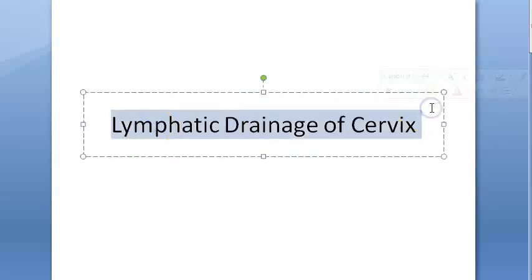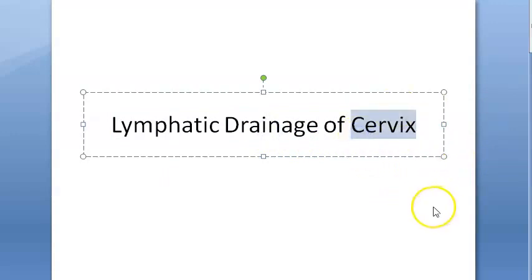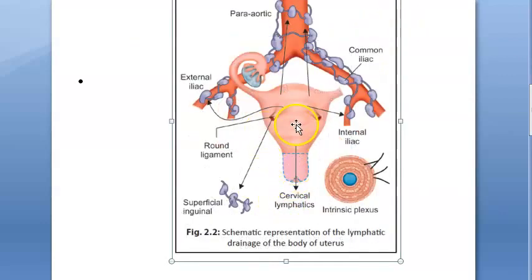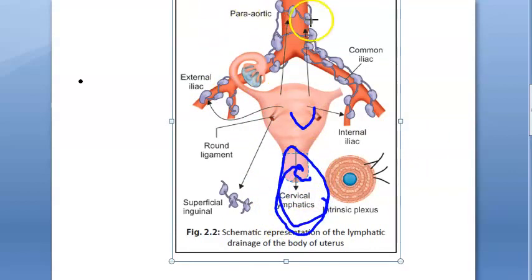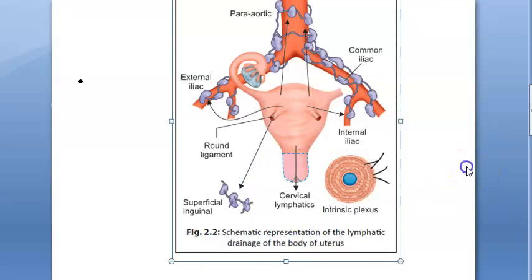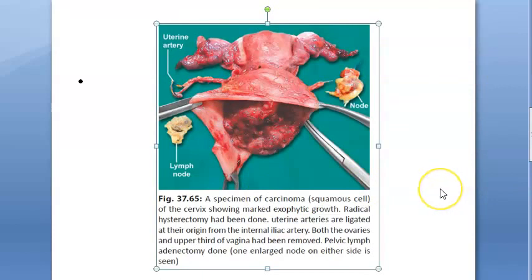In this video we want to look at the lymphatic drainage of the cervix. The cervix is here and this is your uterus. You need to know the drainage of the cervix to understand better the progress of its carcinoma. Cervical carcinoma is so common that is why they are asking you this question in the exam. Let us look at cervical carcinoma - this is a specimen of carcinoma of the cervix.